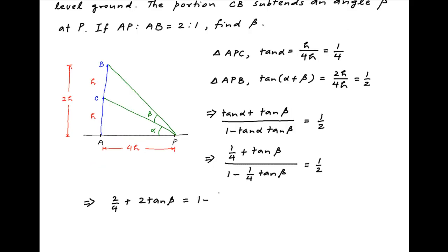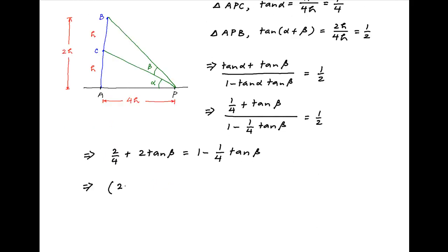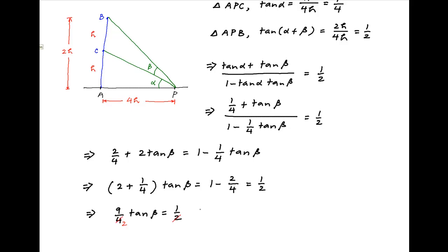Cross multiplying, we get 2 upon 4 plus 2 tan beta is equal to 1 minus 1 upon 4 times tan beta. This implies that 2 plus 1 upon 4 times tan beta is equal to 1 minus 2 upon 4, which is equal to half. This implies that 9 upon 4 tan beta is equal to half, and therefore the value of beta is equal to tan inverse 2 upon 9, which is the required answer.